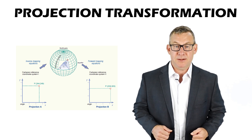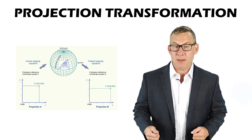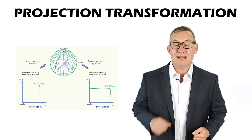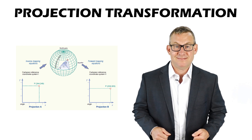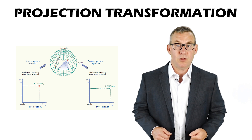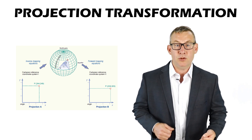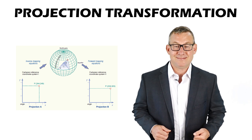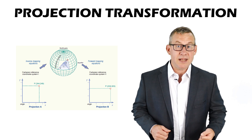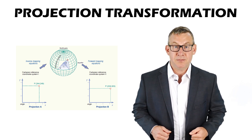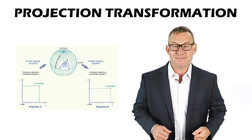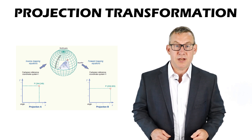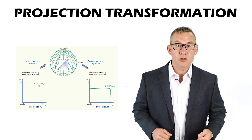A projection transformation transforms data from one map projection to another. This is a three-step process: first, convert from Cartesian coordinates of the source projection to geographic coordinates using the inverse equations from the current projection; second, perform a datum transformation if the source and target projections use different datums; third, project from the intermediary geographic coordinates to the target projection coordinates.